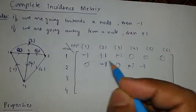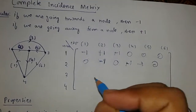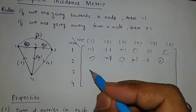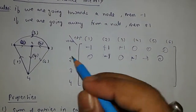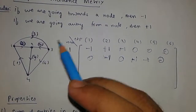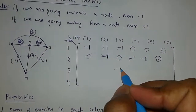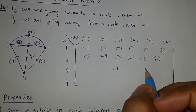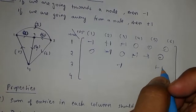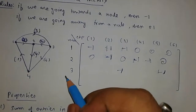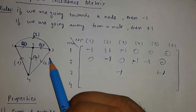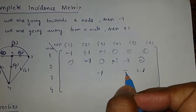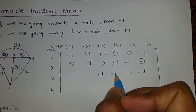All other edges for node two are zero. Similarly, in the case of node three: edge three is going towards node three, so minus one. Edge six is going away from node three, so plus one. Edge five is going away from it, so plus one. All other edges are zero.